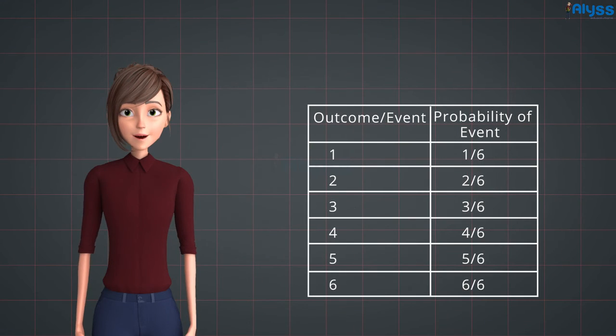Similarly, we will get the probability of each number on the dice as 1 upon 6.